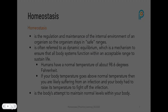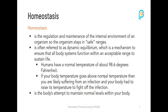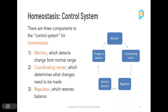Let's jump into homeostasis a little more. Homeostasis is the regulation and maintenance of the internal environment of an organism so the organism stays in safe ranges. It is often referred to as dynamic equilibrium — a mechanism to ensure that all body systems function within an acceptable range to sustain life. For instance, humans have a normal temperature of about 98.6 degrees Fahrenheit. If your body temperature goes above that, you are likely suffering from an infection and your body had to raise its temperature to fight it off.